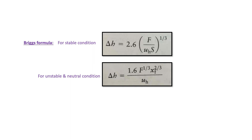The important plume rise formulas are given by Briggs. The formula differs by condition. In stable conditions: Δh = 2.6 × (F / (u_h × s))^(1/3). For unstable and neutral conditions: Δh = 1.6 × F^(1/3) × x_f^(2/3) divided by u_h. Both formulas are very important — keep them in mind.